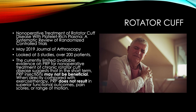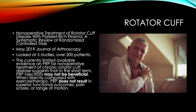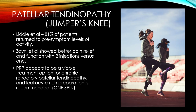For rotator cuff issues, a meta-analysis of five studies accumulating over 200 patients in the Journal of Arthroscopy last year found that, with limited available evidence, using PRP for non-operative treatment of chronic rotator cuff disease may not be beneficial on its own. What we recommend based on these studies is PRP plus a stem cell biologic or exosome.